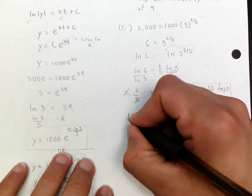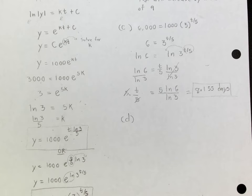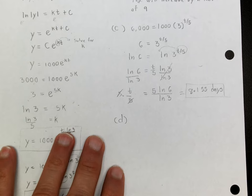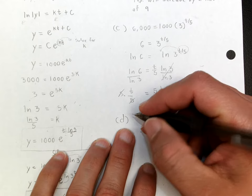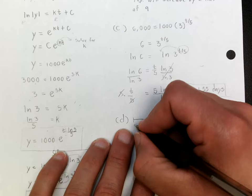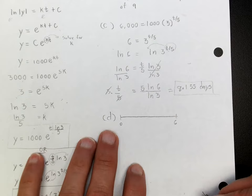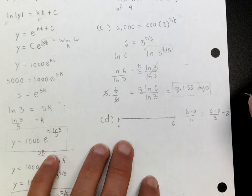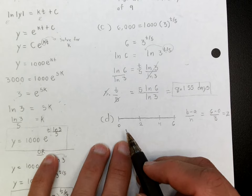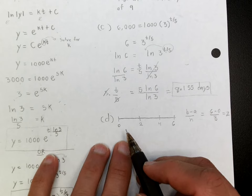Part D asks us to use the trapezoidal rule with 3 equal subdivisions over the first 6 days. First, find the width of each subdivision: (b − a)/n = (6 − 0)/3 = 2. So the intervals are 0 to 2, 2 to 4, and 4 to 6, giving exactly 3 trapezoids.